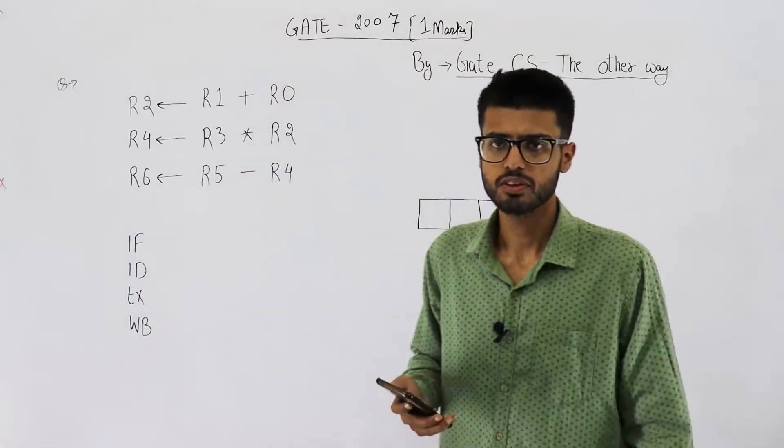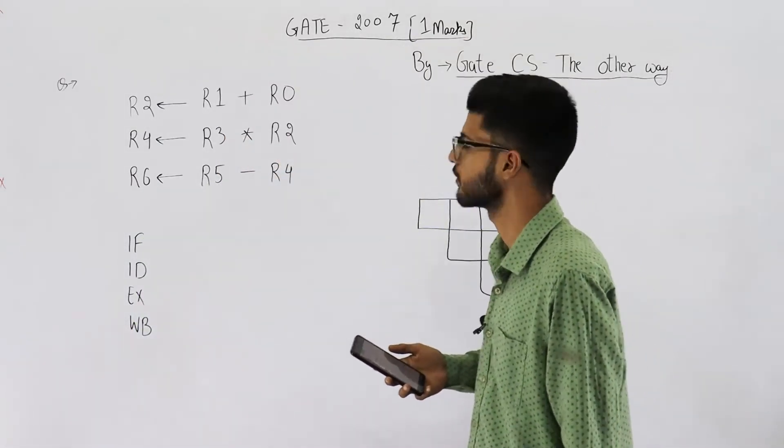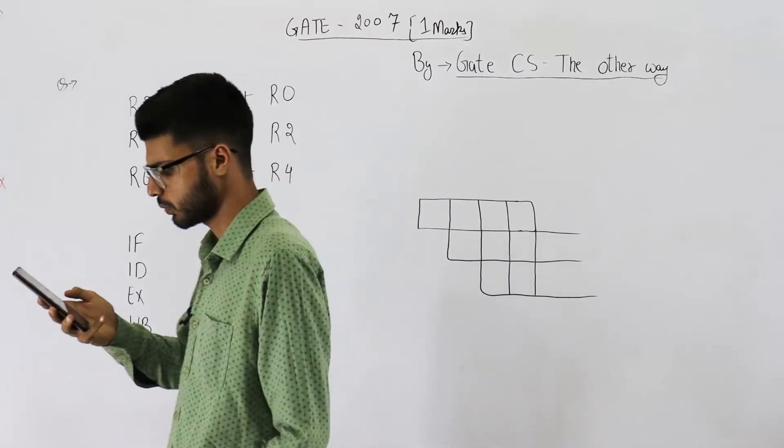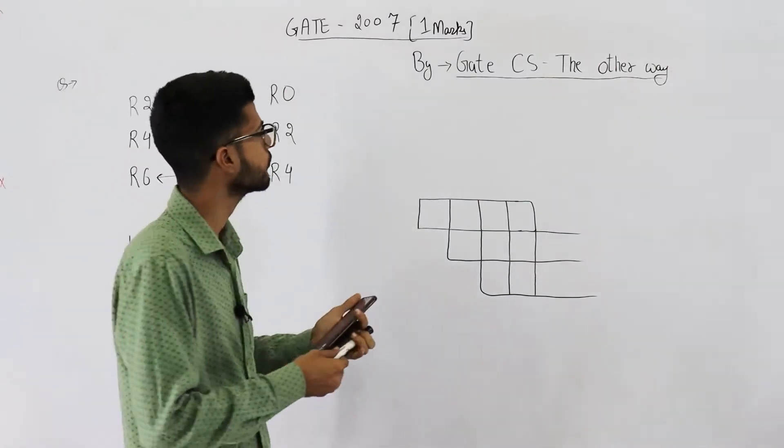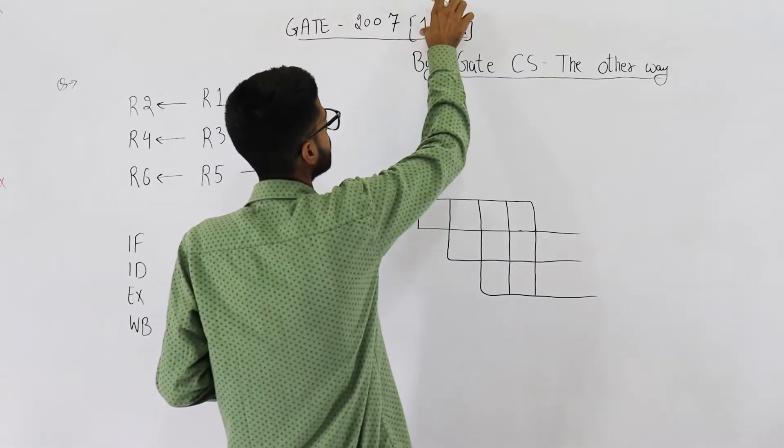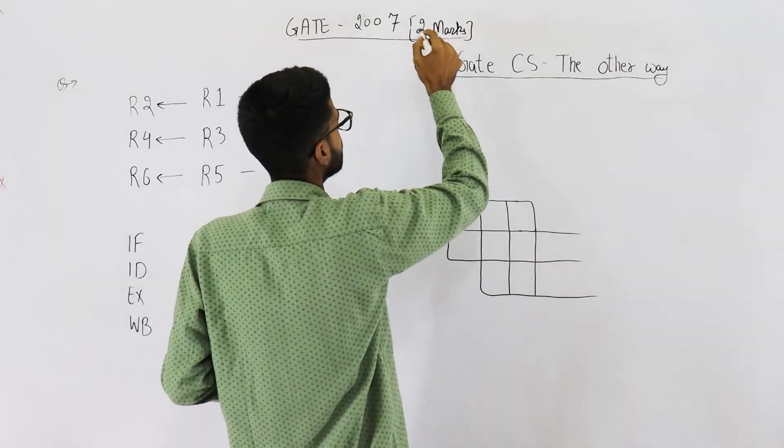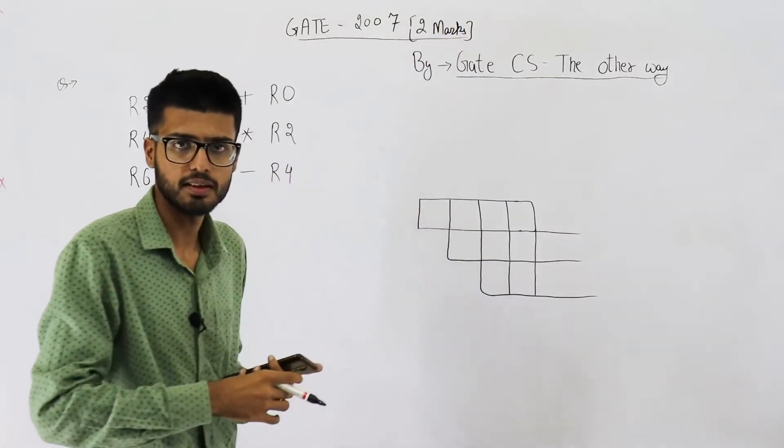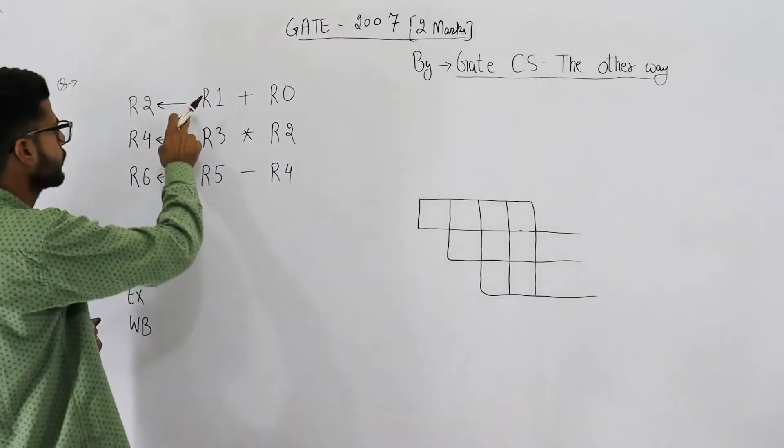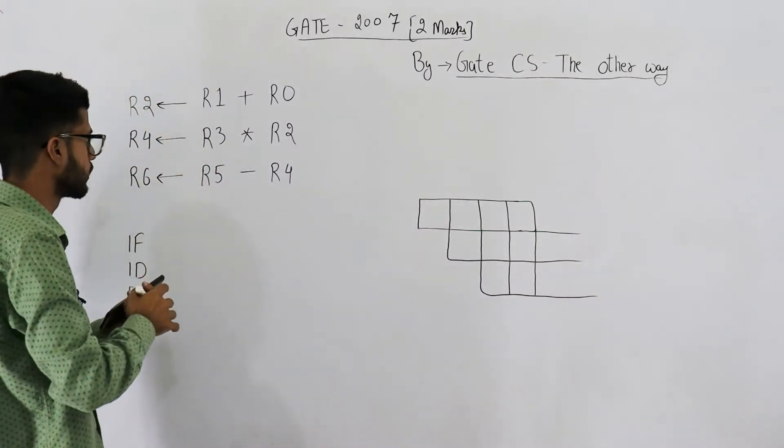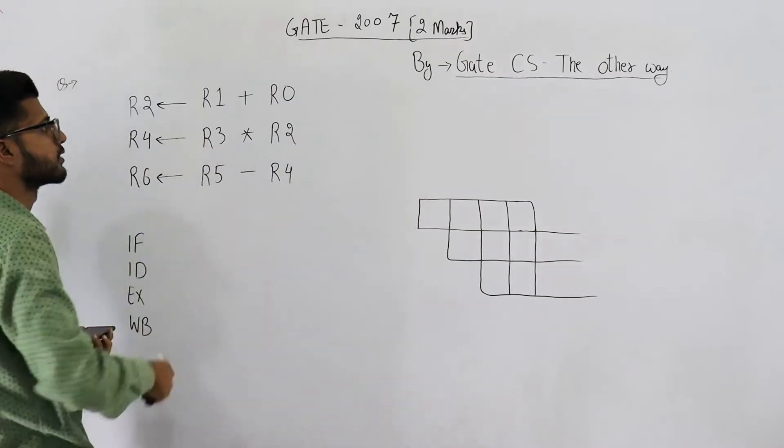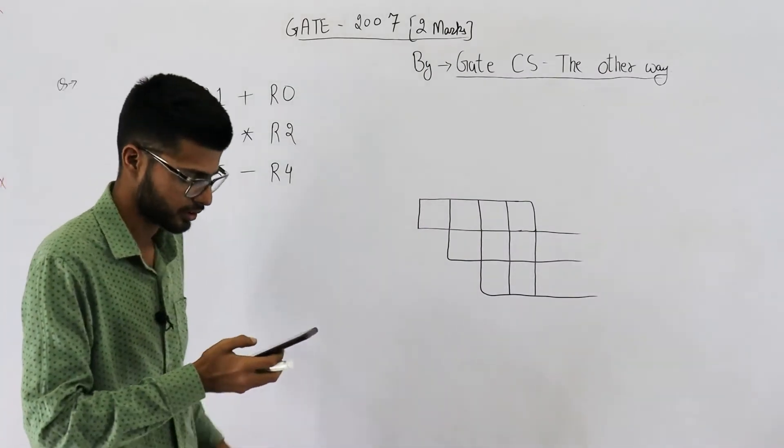Welcome back students, this question was asked in GATE 2007 exam. It's actually a two marks question. They're asking about the number of clock cycles required for execution of this program. The meaning of these instructions are given in the question itself.